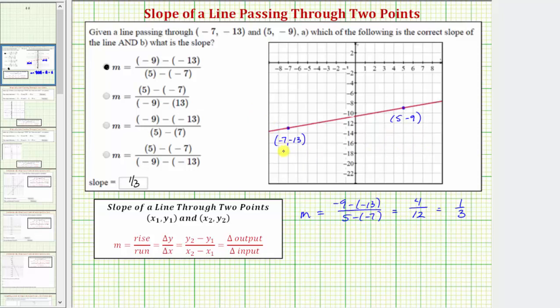So we'll label this ordered pair (x₂, y₂). So using the same slope formula, we have m equals y₂ minus y₁ is now -13 minus -9, and x₂ minus x₁ is -7 minus 5.